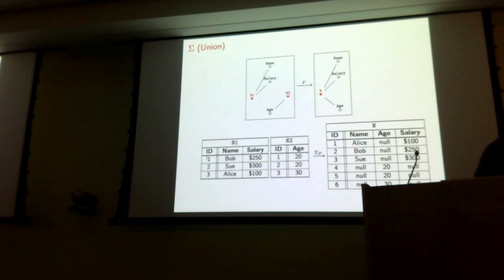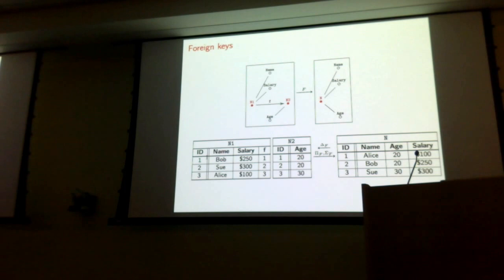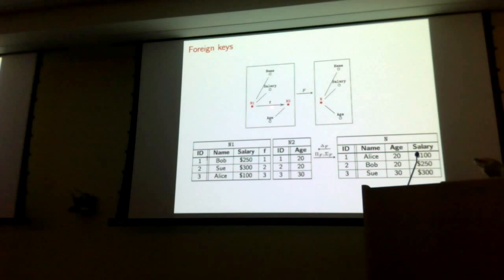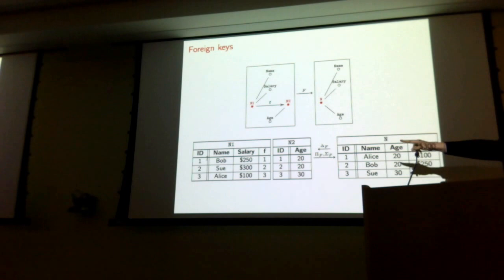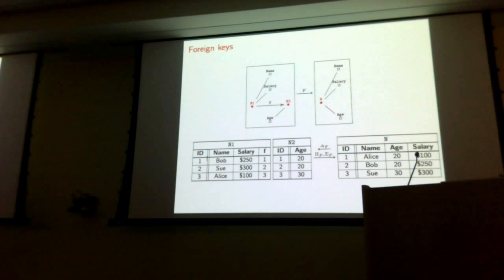To give better intuition on how these three operations work, suppose we add a foreign key from N1 to N2 — call it little f — and it literally just maps 1 to 1, 2 to 2, 3 to 3. What ends up happening is that both pi and sigma will compute the same result. They will take into account the fact that there is a foreign key between N1 and N2 and just naturally join the two tables together. In this case pi and sigma are both operating in the same way. The delta operation going in the other direction does not change at all.